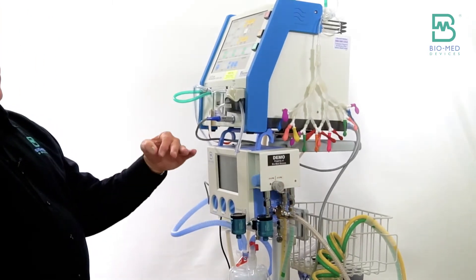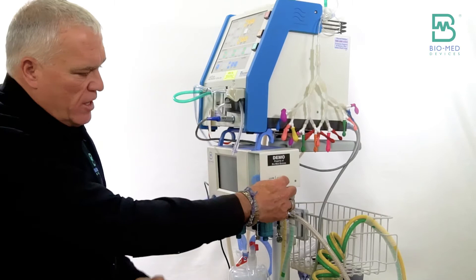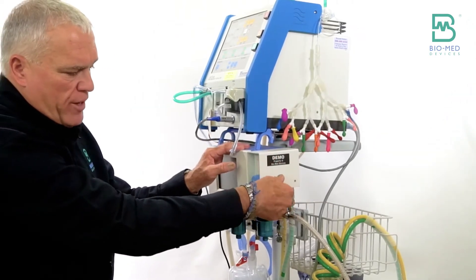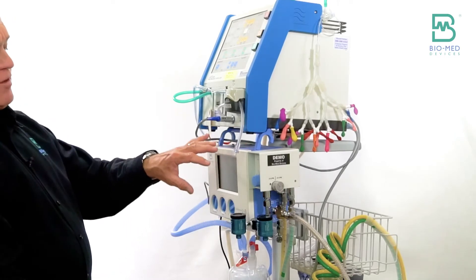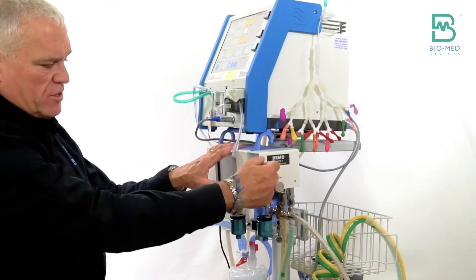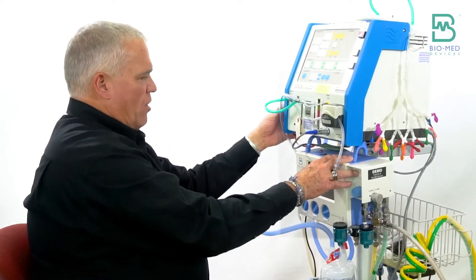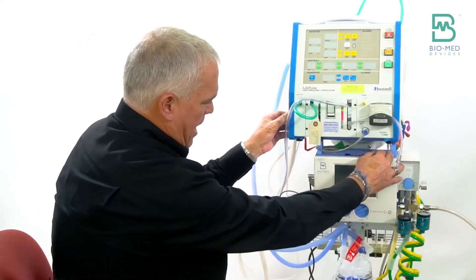If you need to use flows less than three liters, in order to be accurate, you turn that to less than three. Since you're going to use the Crossvent at greater than three liters, you can just leave this to the greater than three position so that it'll always be accurate.